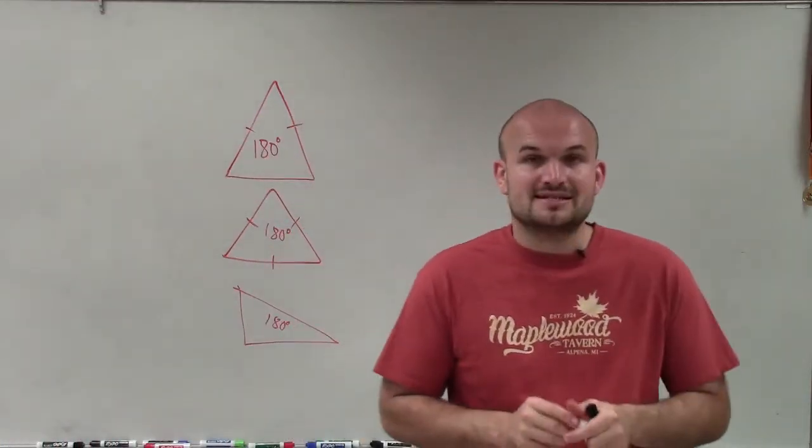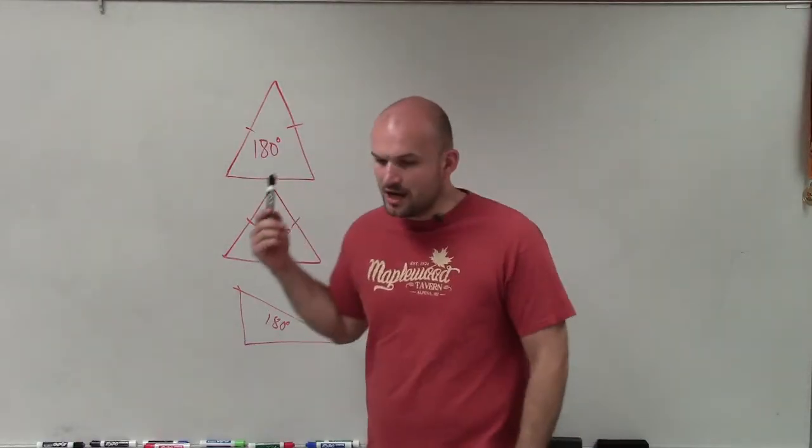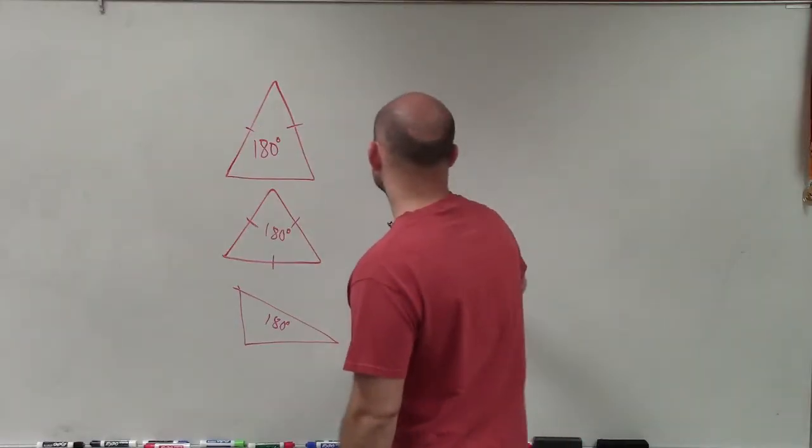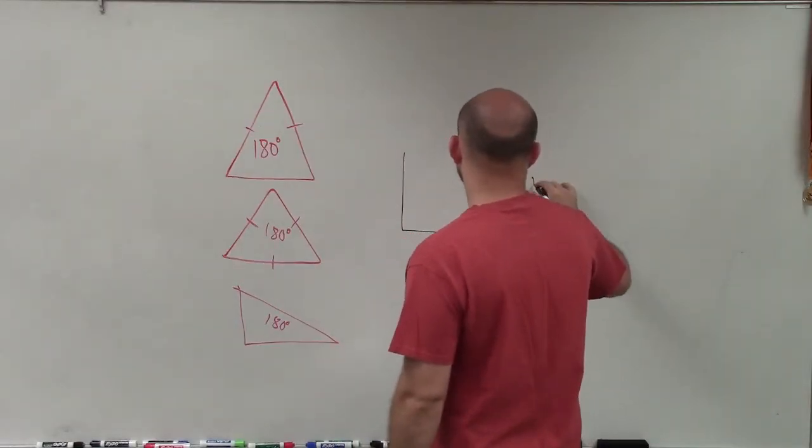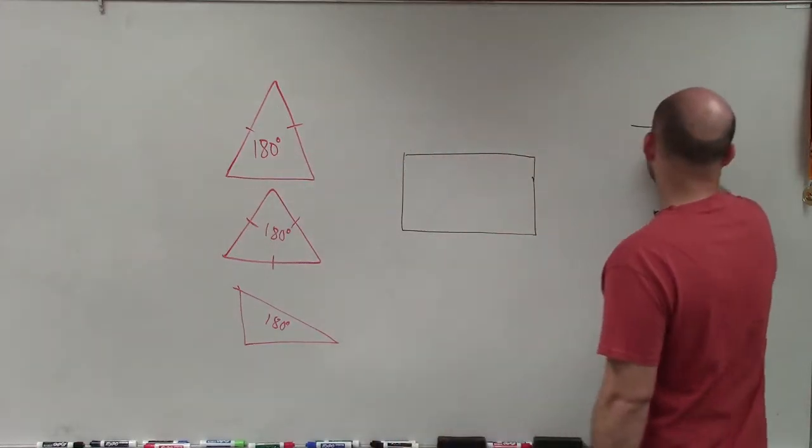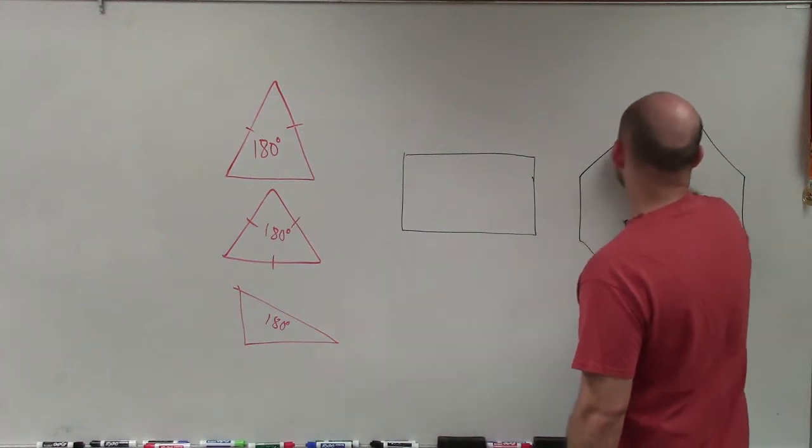So we're going to use that definition to help us identify what is going to be the sum of all the angles in any type of polygon. So I'll look at a rectangle, which would be a quadrilateral, or a regular octagon. I'll try to do my best creating a regular octagon.